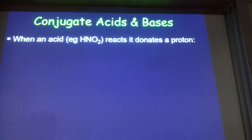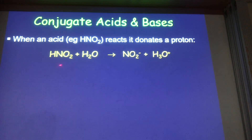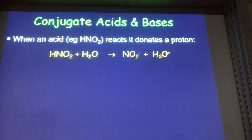When an acid reacts, it donates a proton. So if we react nitrous acid HNO₂ with water, the HNO₂ loses a proton, that proton gets attached to water to turn it into H₃O⁺ hydronium, and we end up with the nitrite ion.